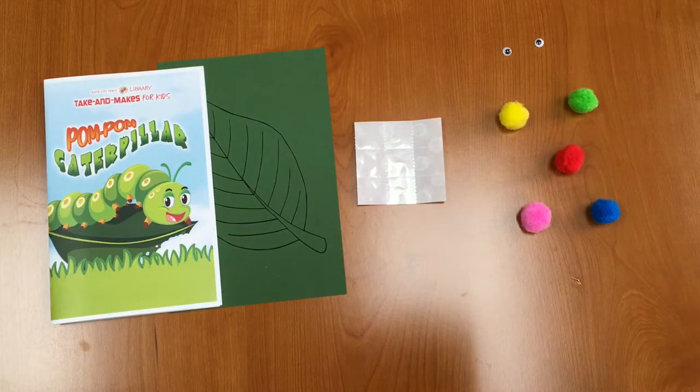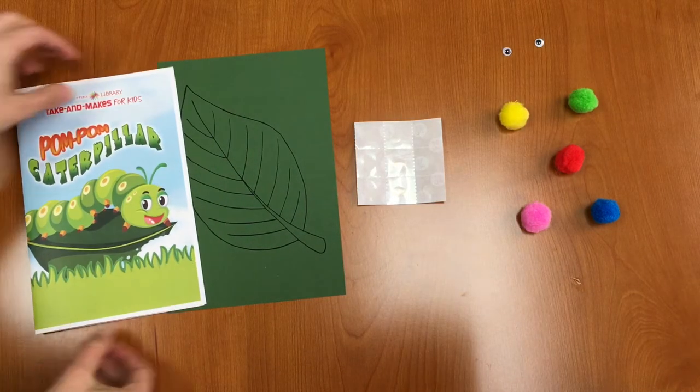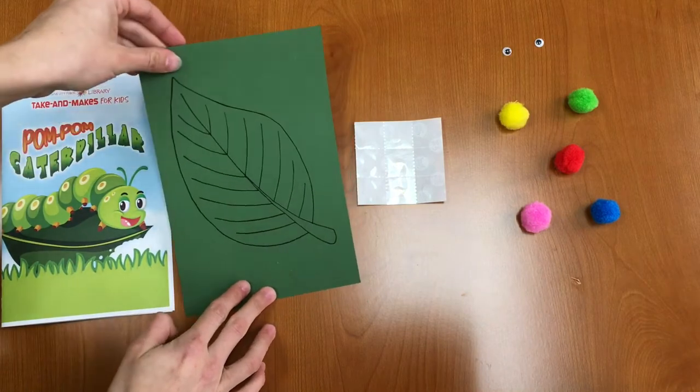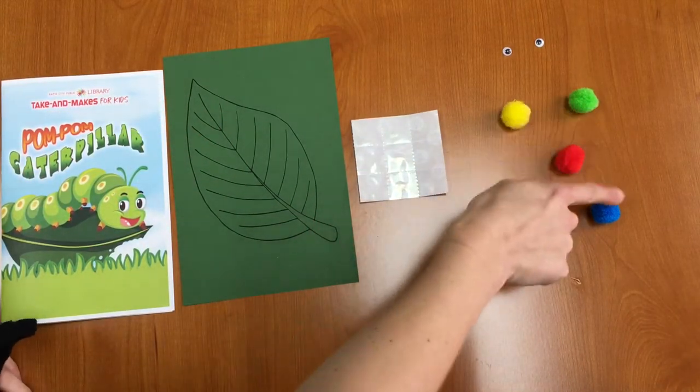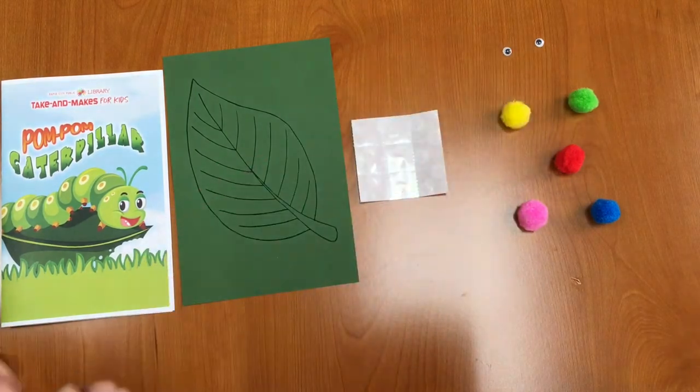In your Take and Make kit you should have an instruction booklet, a green leaf on construction paper, some glue dots, five pom-poms, and two googly eyes. Let's get started.